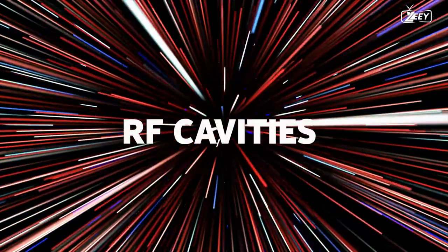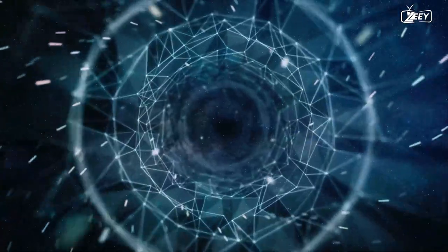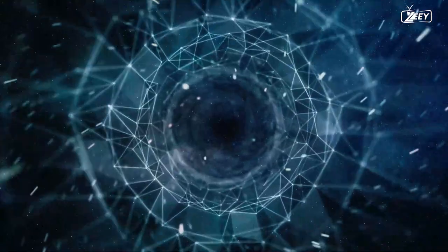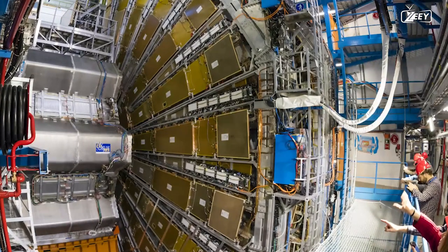The major approach for accelerating particles is to employ radiofrequency cavities, or RF cavities. In layman's terms, these are tubes located all along the collider that contain an electric field that changes direction on a regular basis. The LHC has 16 radiofrequency cavities.